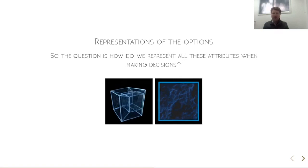So the question in a lot of this work is, how do we represent all these attributes when we're making decisions? Do we represent each attribute individually and have some kind of very high-dimensional representation of the object, or do we collapse information across multiple attributes and kind of simplify it down into maybe a choice between a high-quality, high-price option and a low-quality, low-price option?